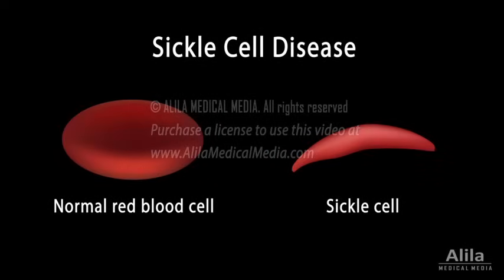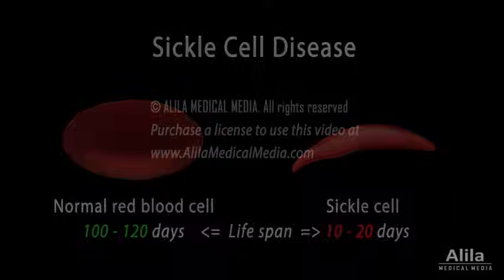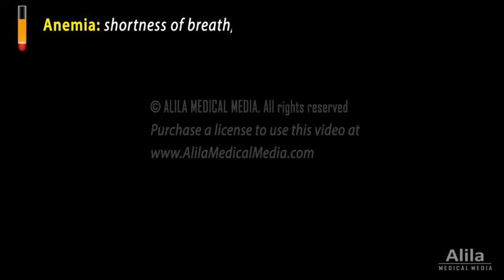Sickle cell disease is a group of inherited blood disorders in which the body produces abnormally shaped red blood cells that look like crescent moons or sickles. Sickle cells have a shorter than normal lifespan. Their premature destruction results in a shortage of red cells, known as anemia. Signs of anemia include shortness of breath, fatigue, and delayed growth in children.